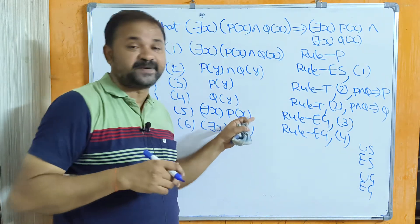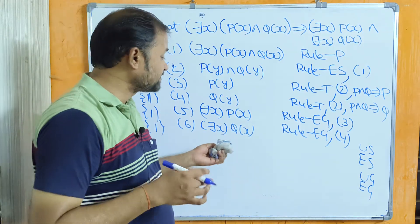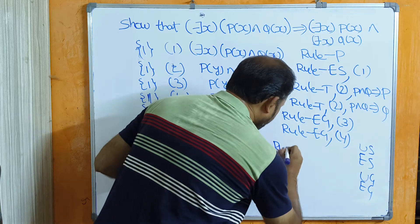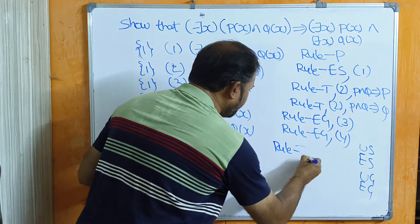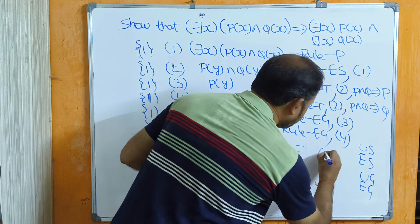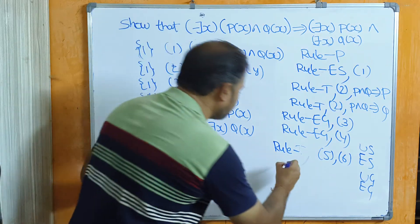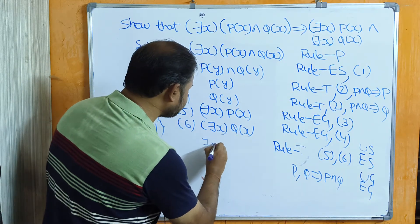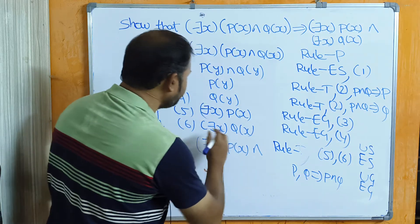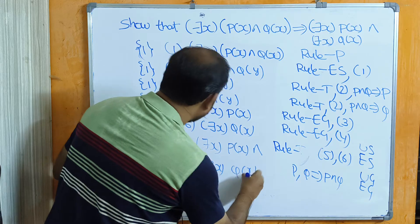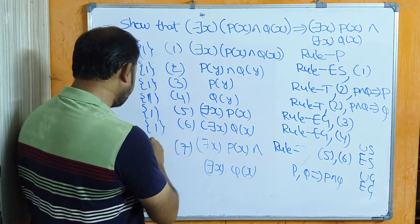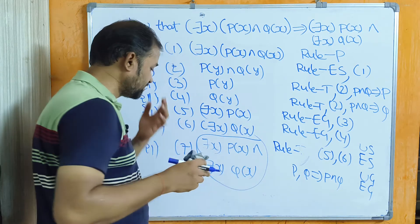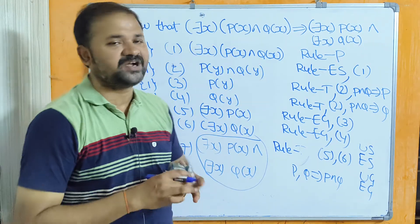Now let ∃xP(x) be P and ∃xQ(x) be Q. We have a formula P, Q implies P ∧ Q. So applying Rule T on statement formula numbers 5 and 6, with the formula P, Q → P ∧ Q, we get ∃xP(x) ∧ ∃xQ(x) as statement formula number 7, from premise 1. If we observe the RHS, it is ∃xP(x) ∧ ∃xQ(x) — so we have obtained RHS as the result, and we can say LHS equals RHS.